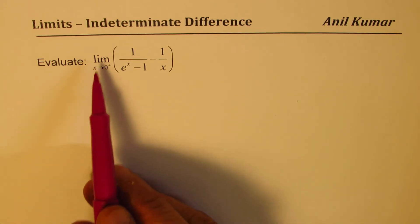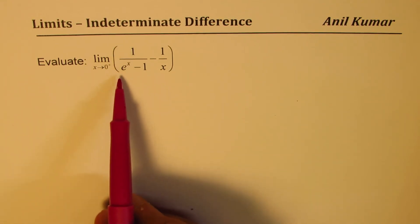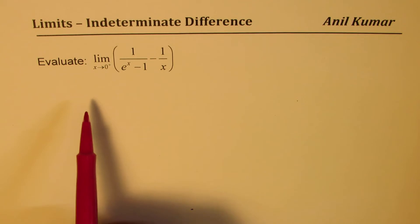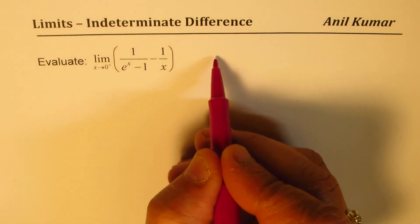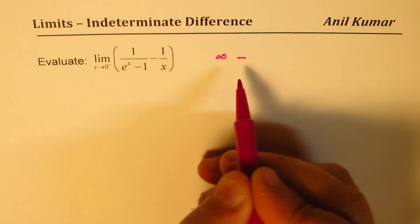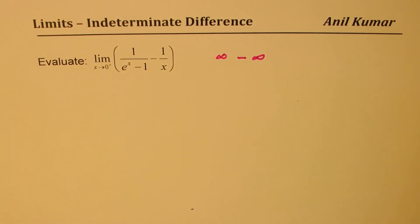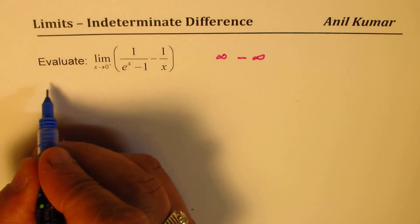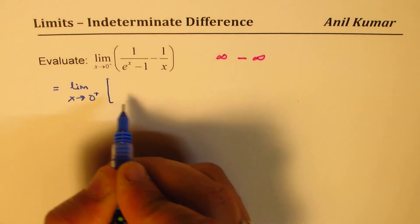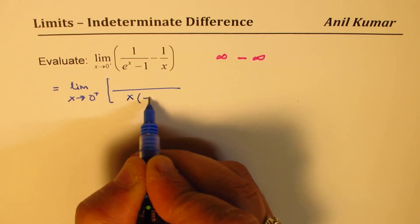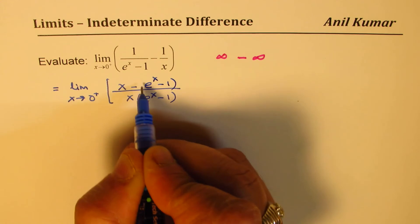In the last example, we find the limit as x approaches 0 from the right of 1/(e^x minus 1) minus 1/x. Substituting 0: e to the power 0 is 1, so 1 minus 1 is 0 giving infinity in the first term, and the second term also gives infinity. We take a common denominator: the denominator becomes x times (e^x minus 1), and after cross-multiplying the numerator is x minus (e^x minus 1).